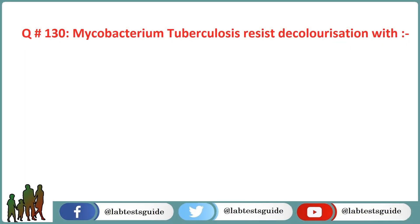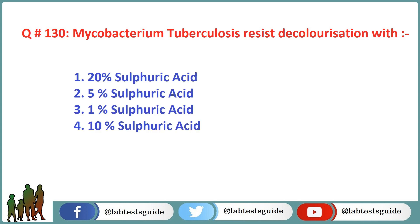Next question is 130: Mycobacterium tuberculosis resists decolorization with? Option 1: 20% sulfuric acid. Option 2: 5% sulfuric acid. Option 3: 1% sulfuric acid. Option 4: 10% sulfuric acid. The correct answer is Option 1: 20% sulfuric acid.